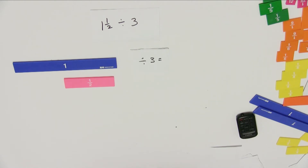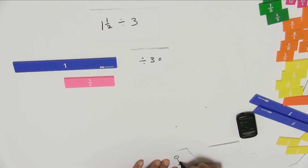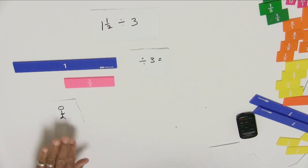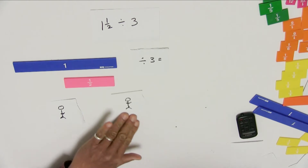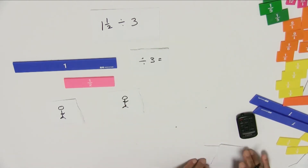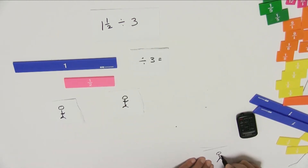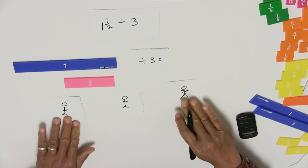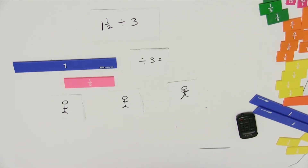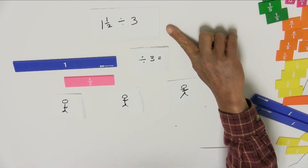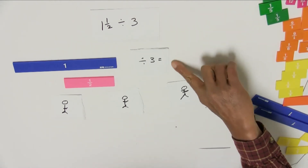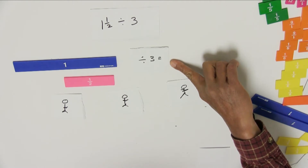So what I'm interested in figuring out is how much does one person receive? In order to solve this problem, I need people to represent one person. So here are my three people. Here's the problem: 1 and ½ divided by 3.